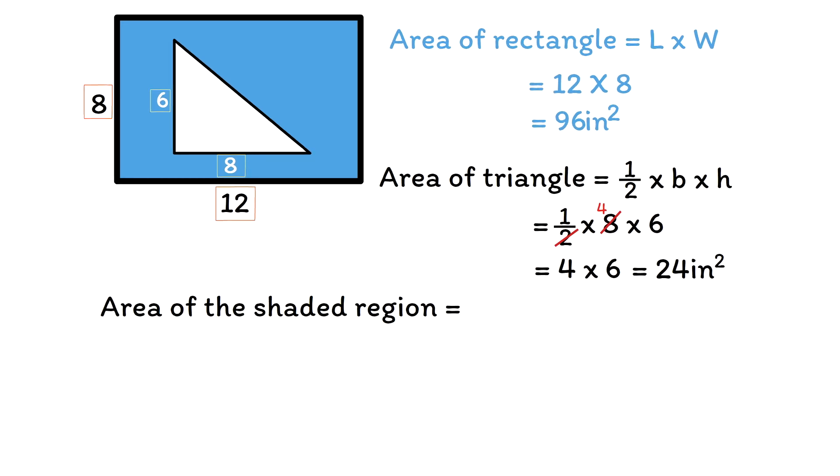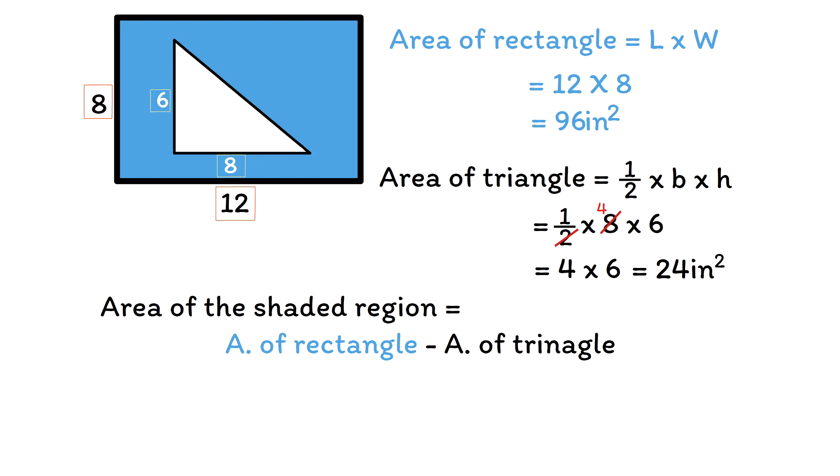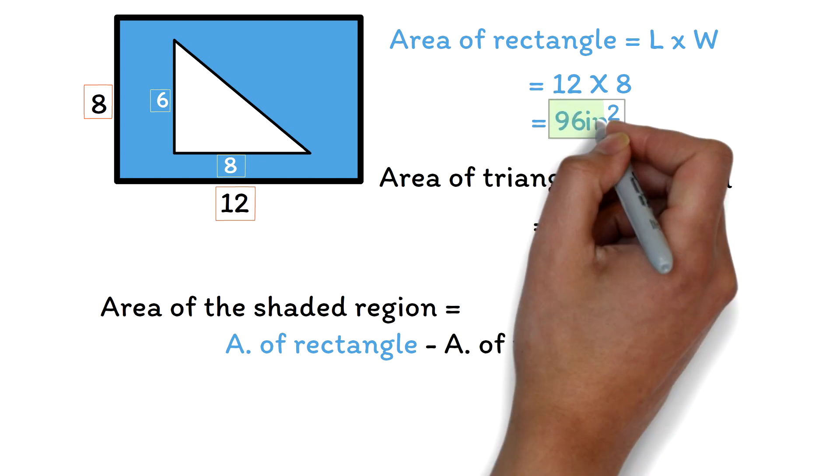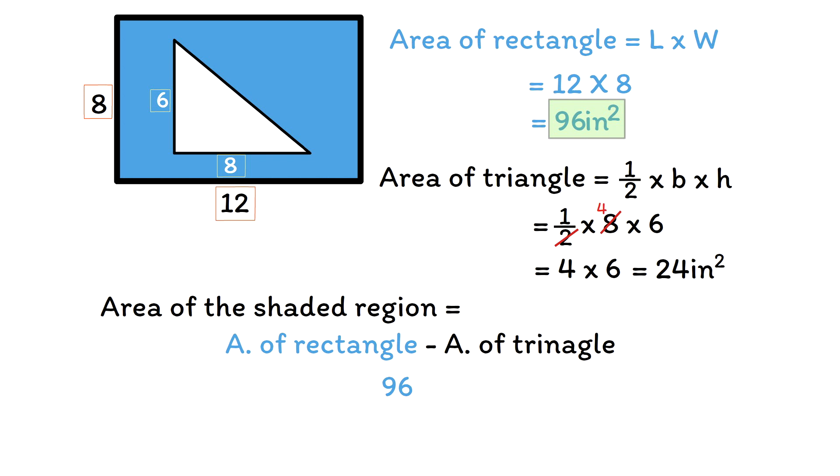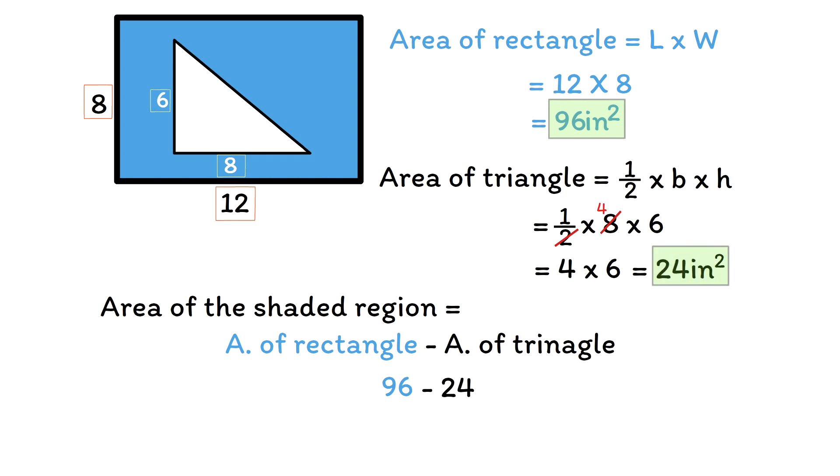Now the area of the shaded region will be the area of the rectangle minus the area of the triangle. With the area of the rectangle, we had 96. And with the area of the triangle, we got 24. 96 minus 24 gives us 72. Hence the area of the shaded region is 72 inches squared.